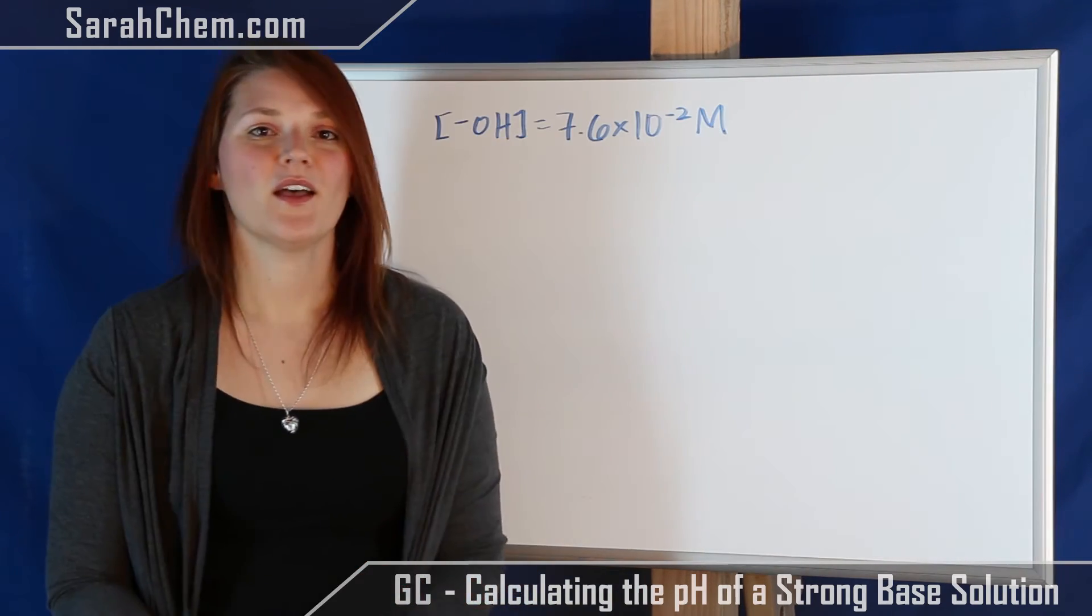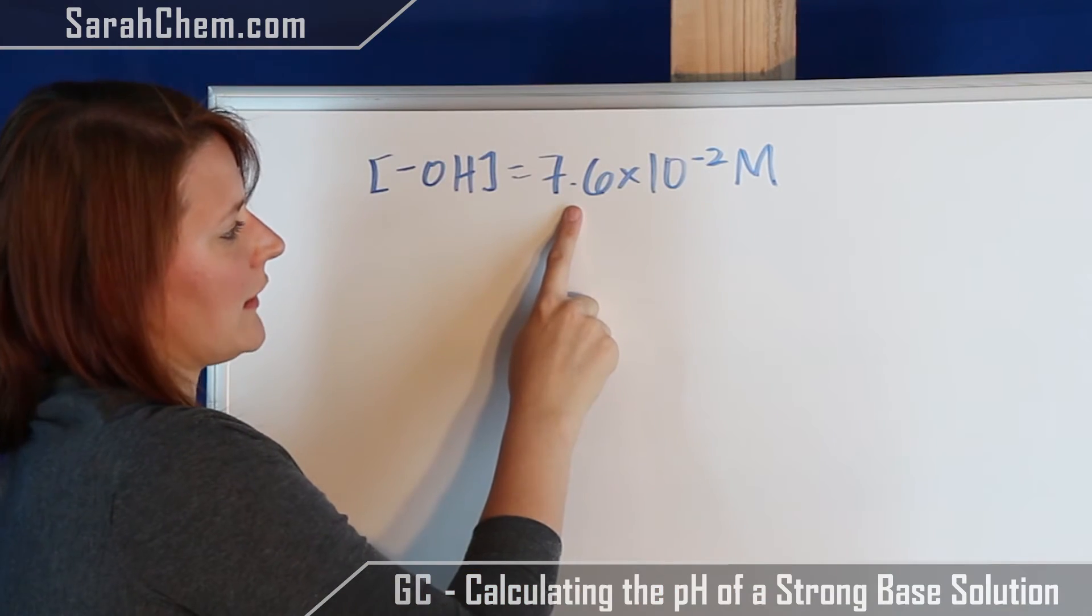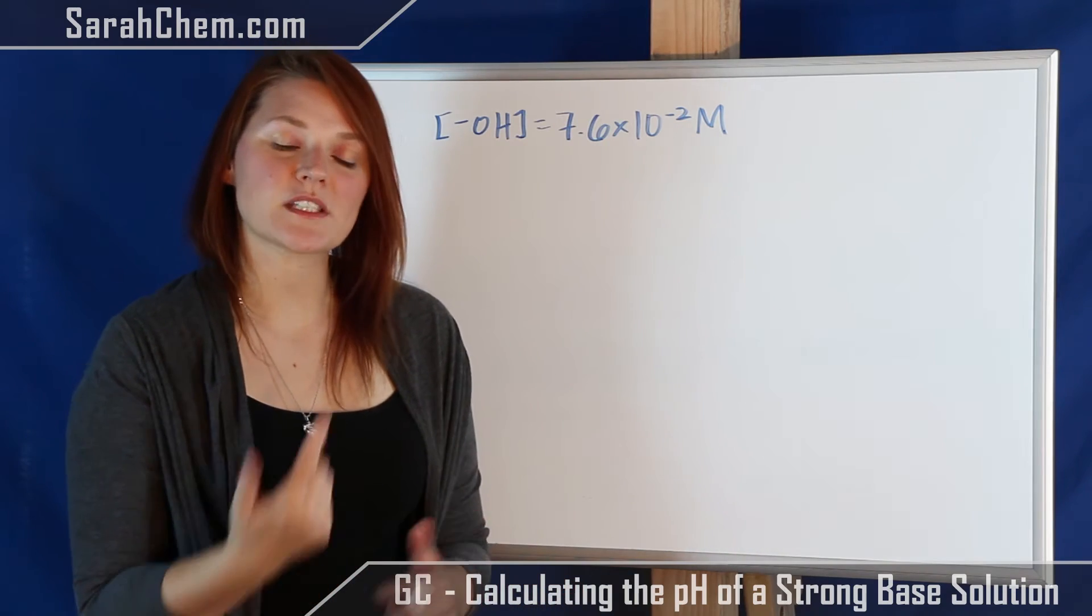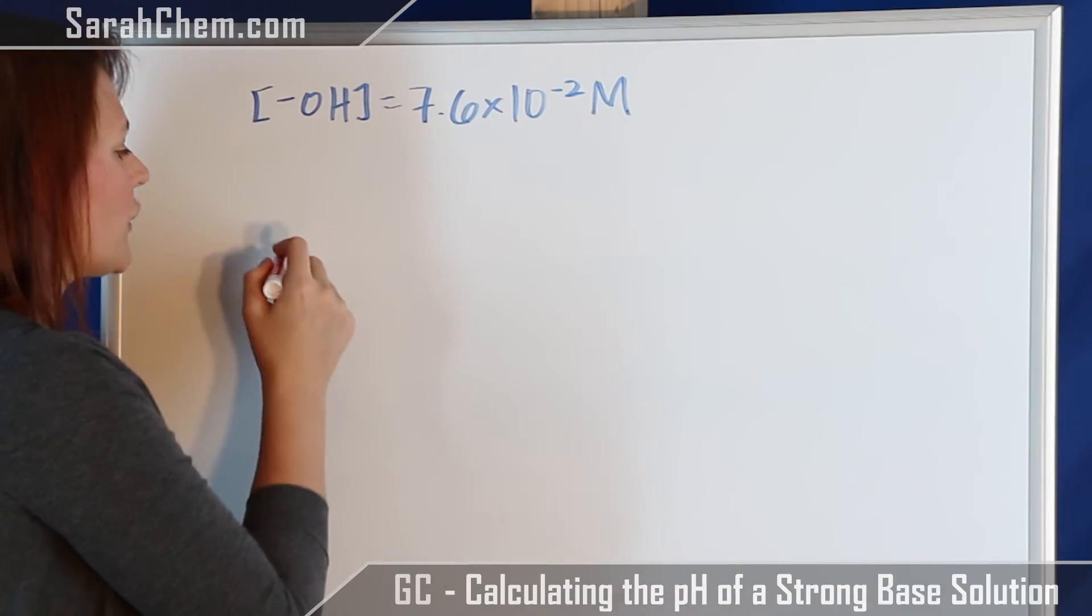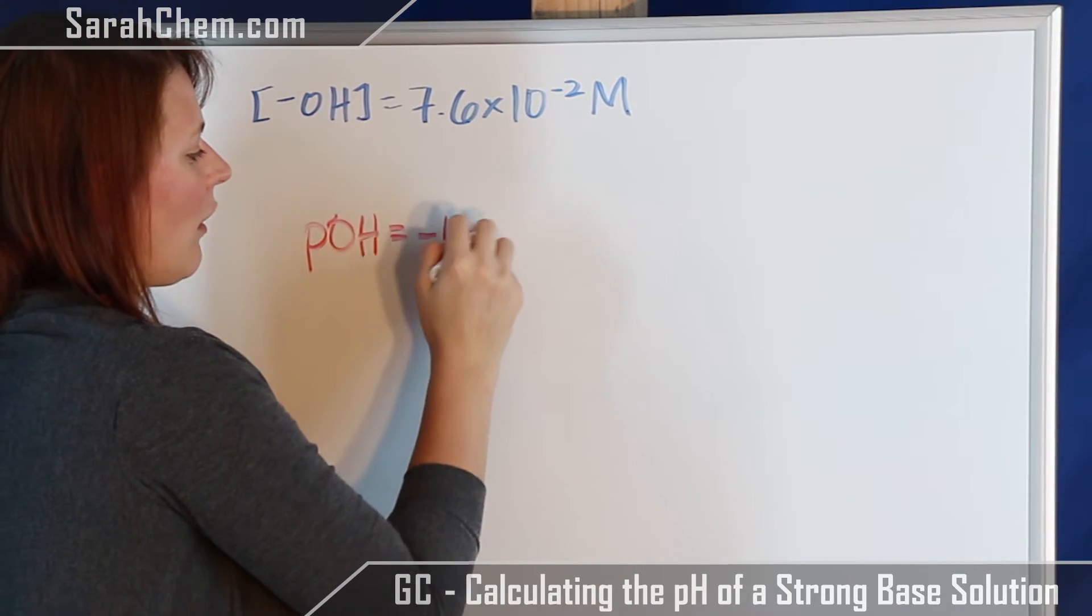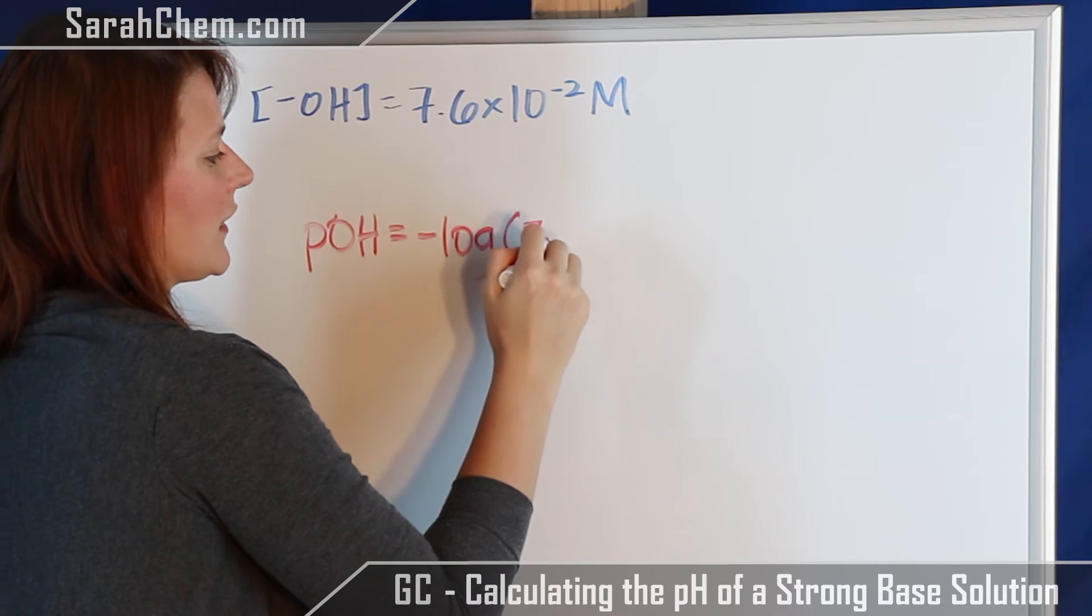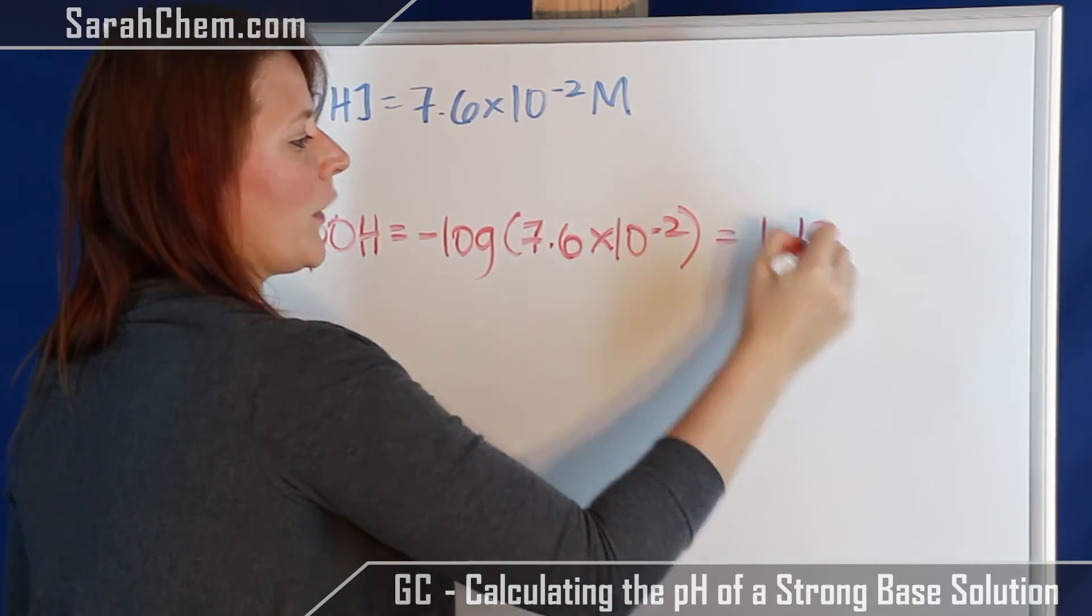Let's take a look at that. So here we have our value of our hydroxide concentration, 7.6 times 10 to the minus 2 molar. We can plug that into our equation for pOH and solve for the value. So we have pOH is equal to the negative log of this concentration, which is 7.6 times 10 to the minus 2. From this we get a value of 1.12.